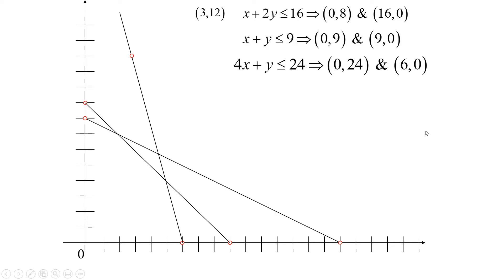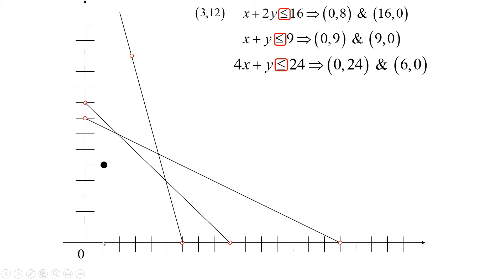Now let's look at the inequalities — they're all less than or equal to. This gives us what we call a feasible region. The feasible region is the bottom corner of quadrant one, because that region is less than or equal to all three boundary lines. Any point in the feasible region is a feasible solution. For example, the point (1, 5) — one smart TV and five UHD TVs per hour — is a feasible solution. But the question is: does it maximize our profit?